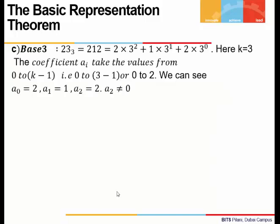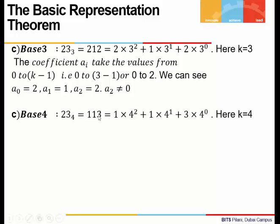What if we represent 23 to base 3? When we divide 23 by 3 repeatedly, we get the values 2, 1, 2 as remainders, and this has been written as a sum of powers of 3. We can see a_0 is 2, a_1 is 1, and a_2 is 2. All of them are positive. The values of these coefficients lie from 0 to k minus 1, where k is 3, so our values lie from 0 to 2. The coefficient of the highest power of 3 is 2, which is non-zero.